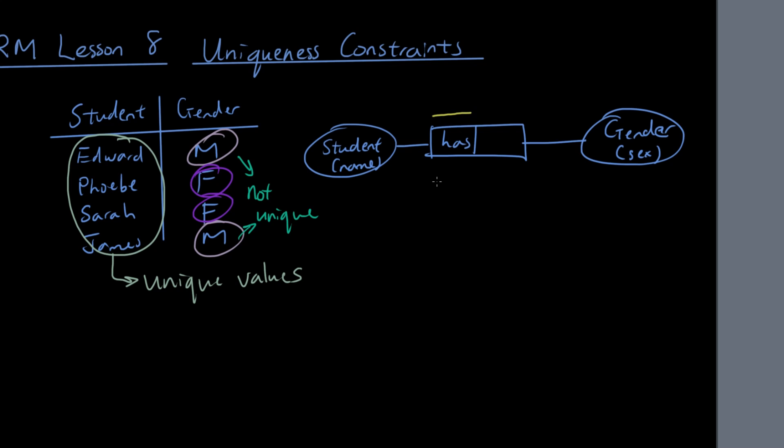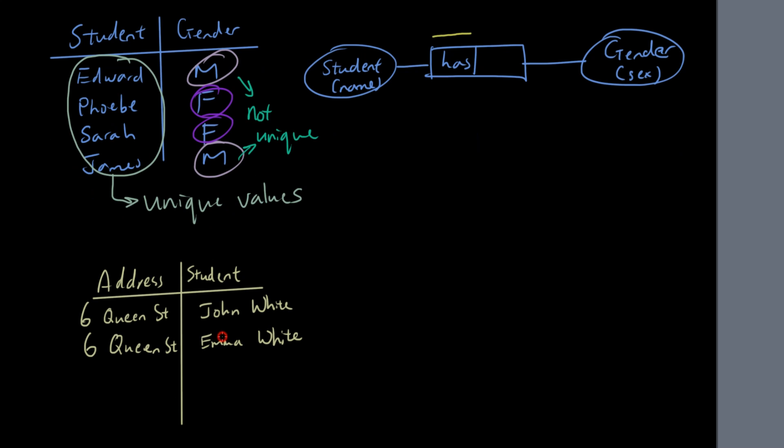If it was the other way around, let's give you another example. Let's say we now have two entities, we have address and student. And you can see here that the address is not unique. So we have one address, 6 Queen Street, and there are two different students living at that address.